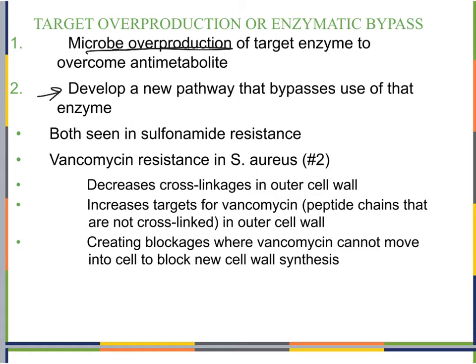Bacteria can also develop a new pathway that bypasses the use of that enzyme altogether — enzymatic bypass. If our antibacterial A attaches to enzyme A and stops it, the bacteria can instead make enzyme B, which produces the same product that enzyme A used to make. Our antimicrobial will still attach to all the enzyme A's and stop them, but the resistant bacterium can make enzyme B and happily continue making copies of itself.